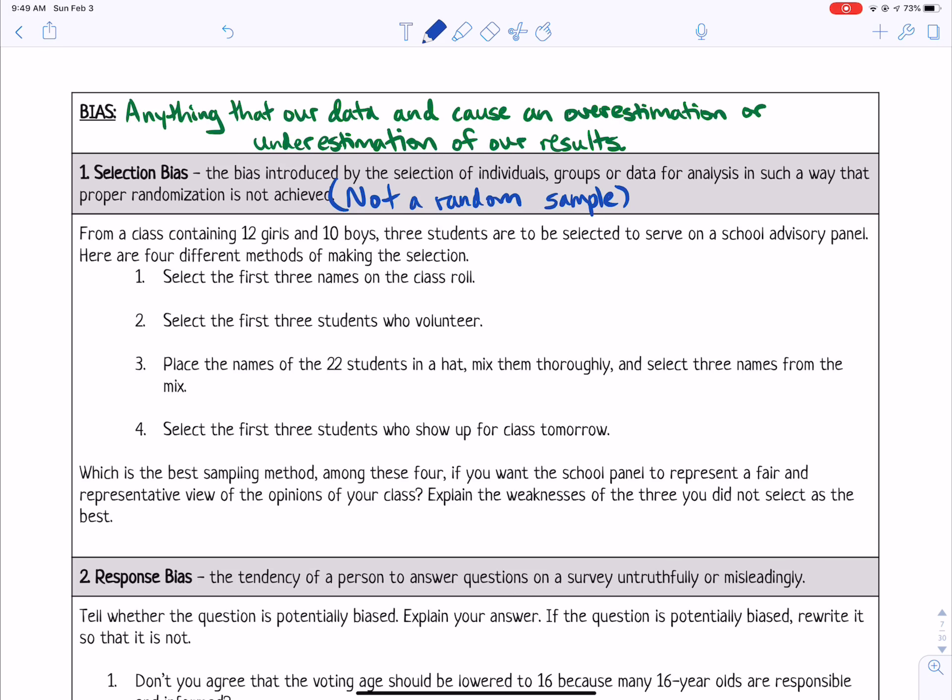Select the first three students who volunteer. Place the names of the 22 students in a hat, mix them thoroughly, and select three names from the mix. Or four, select the first three students who show up for class tomorrow.